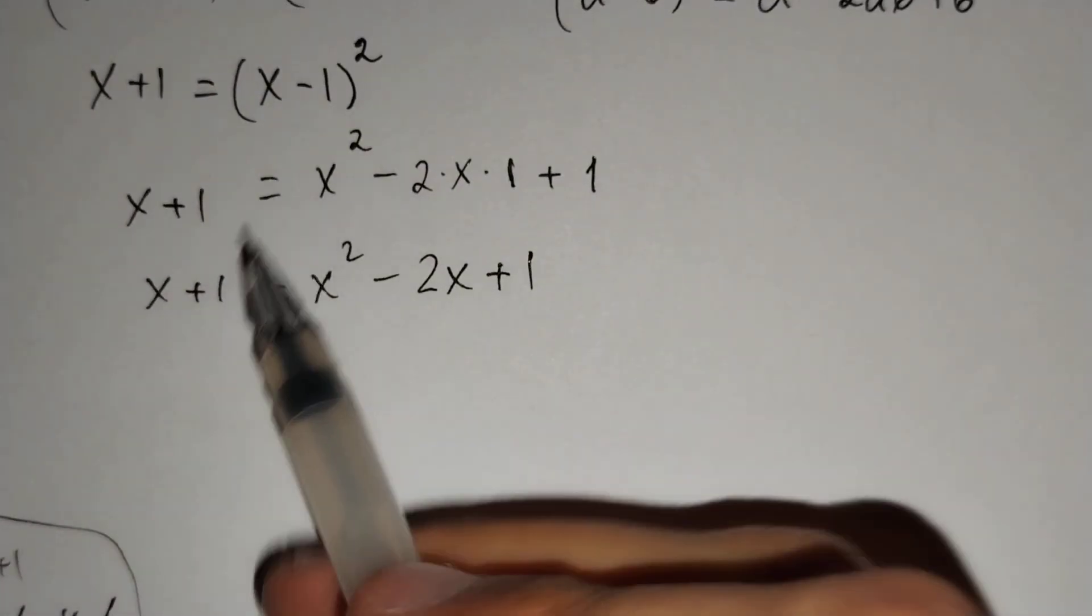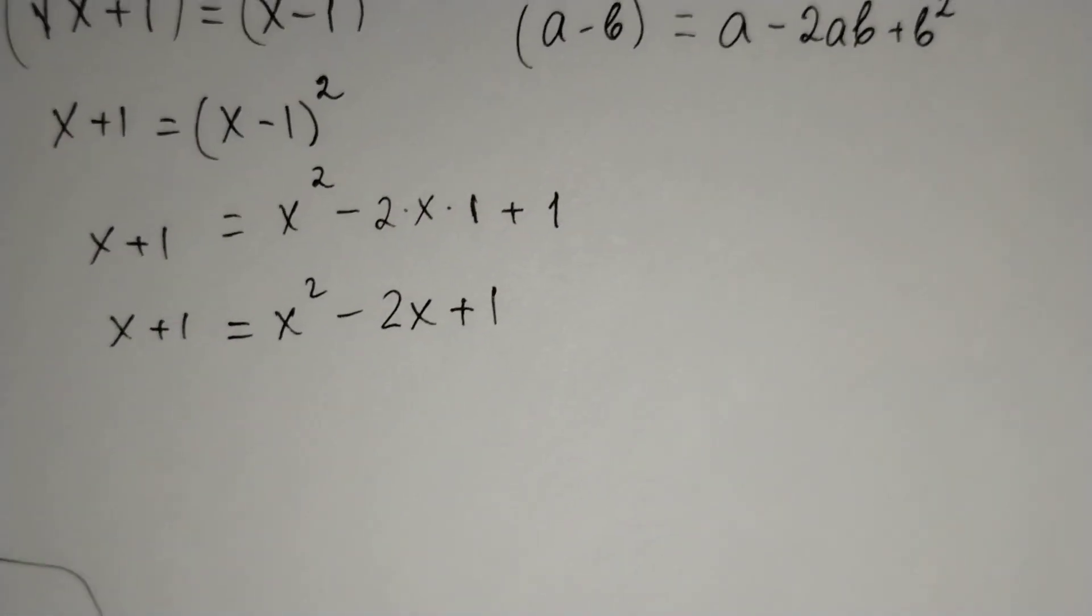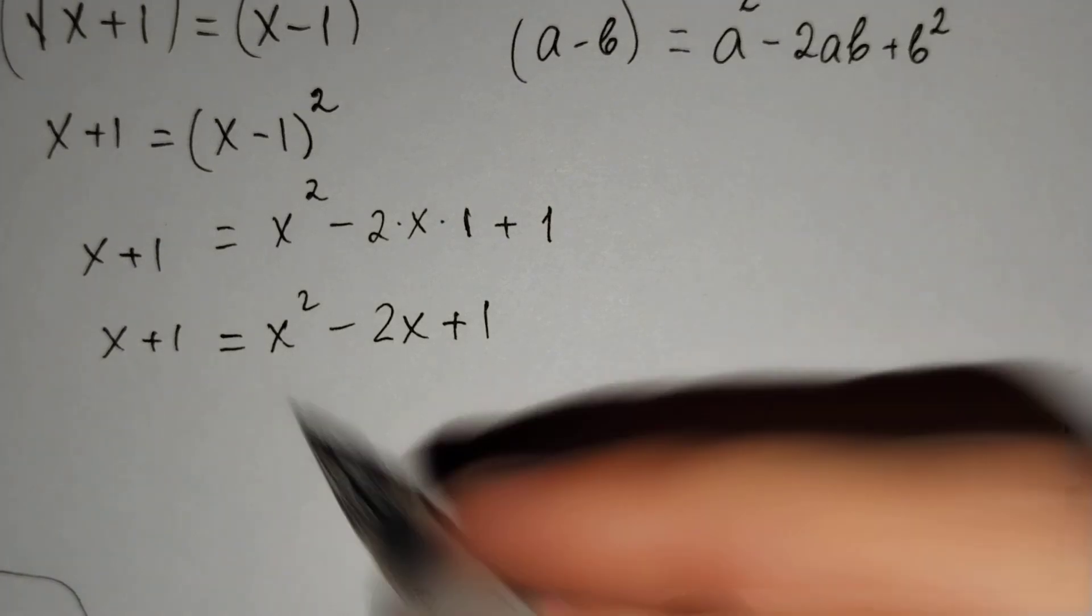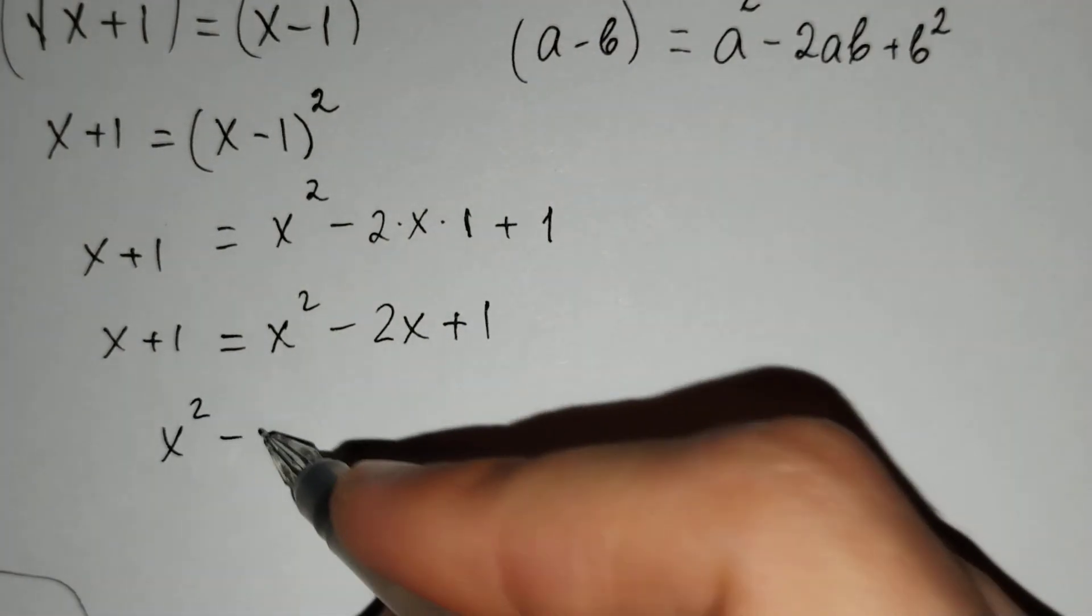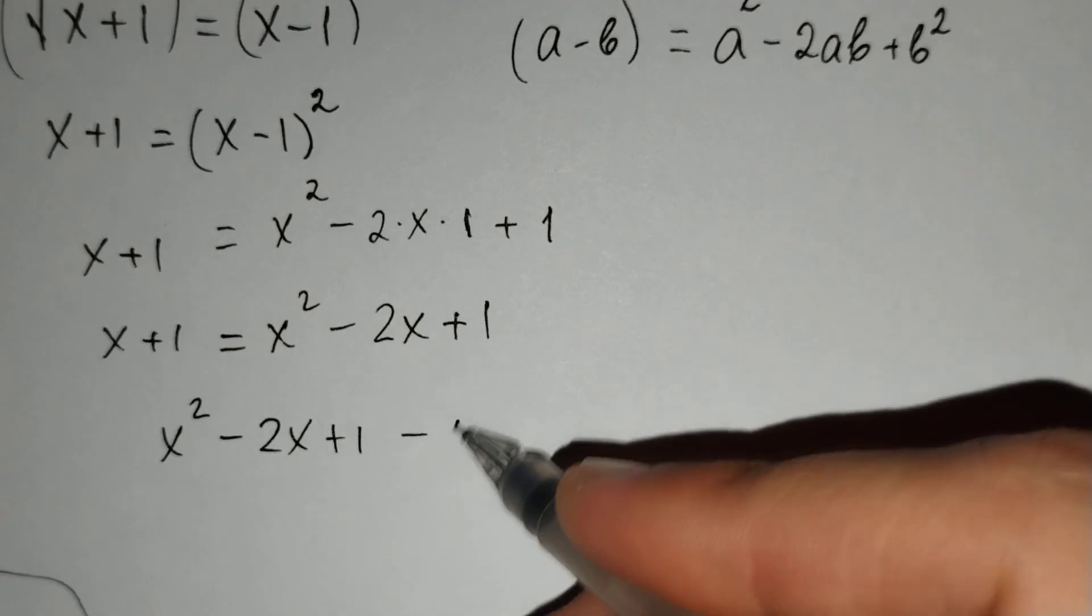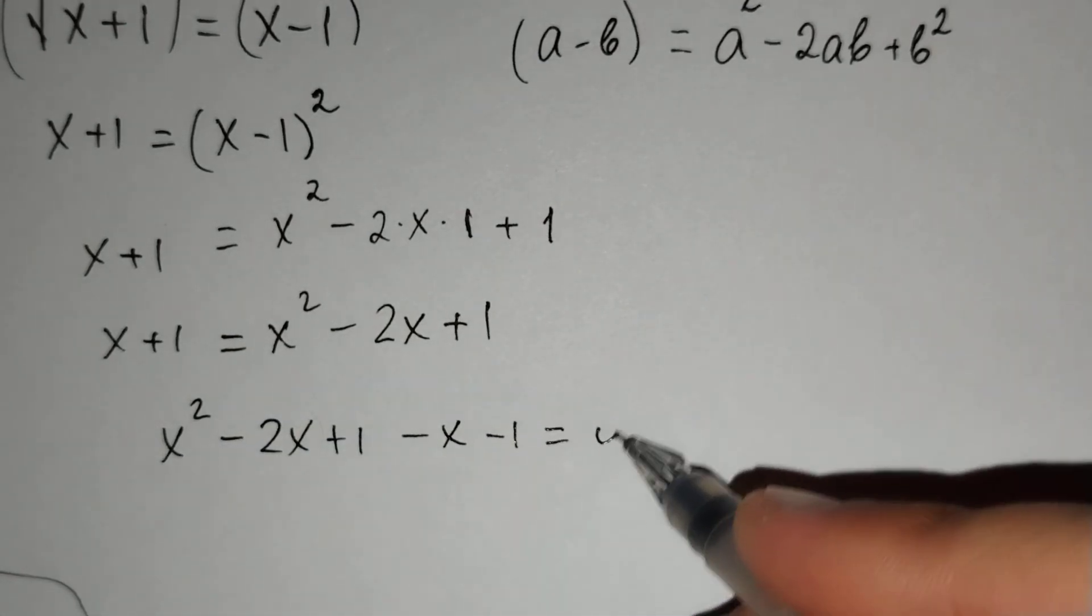Then, if we move x plus 1 to the other side of our equation, x squared minus 2x plus 1 minus x minus 1 equals 0.